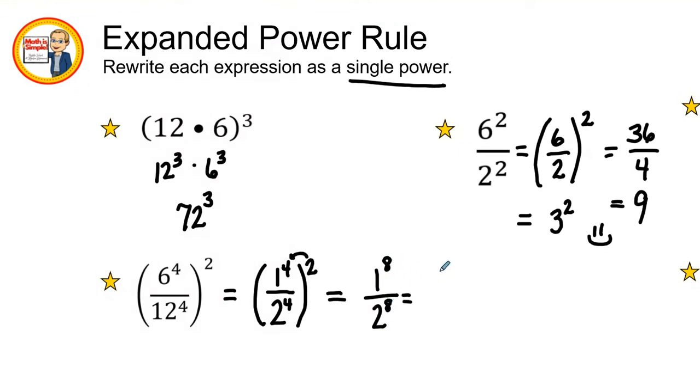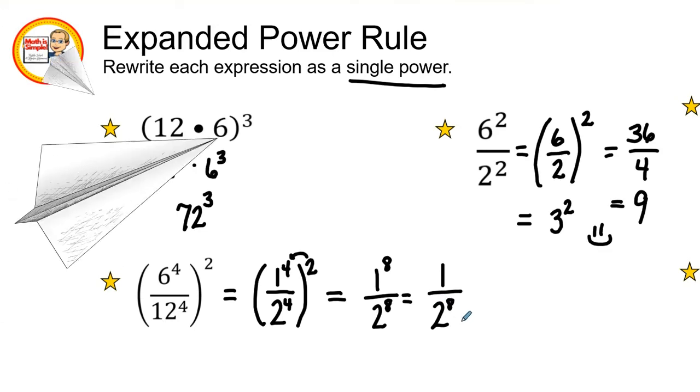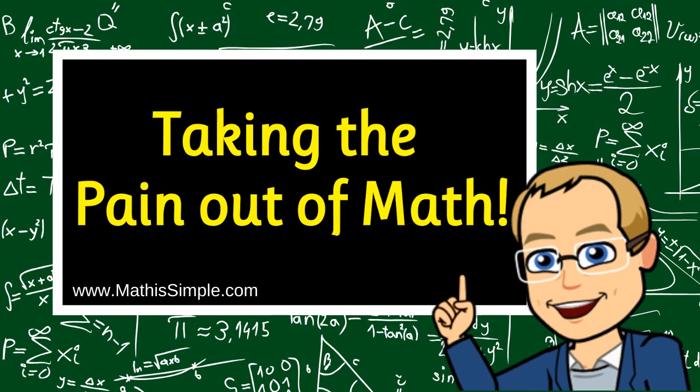Well, one to the eighth power is just one and I can keep it as two to the eighth power, or I can find out that two to the eighth power and just leave it just as that is my final answer. Thank you.